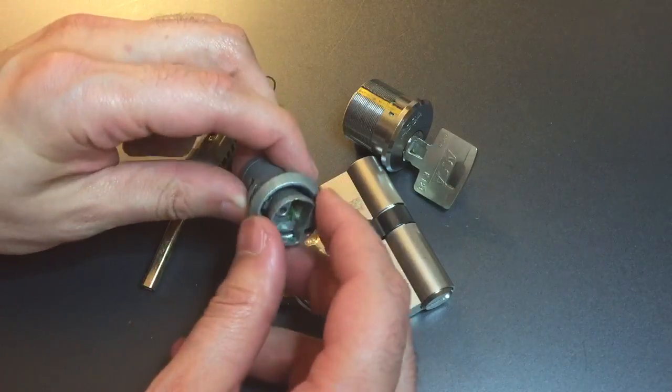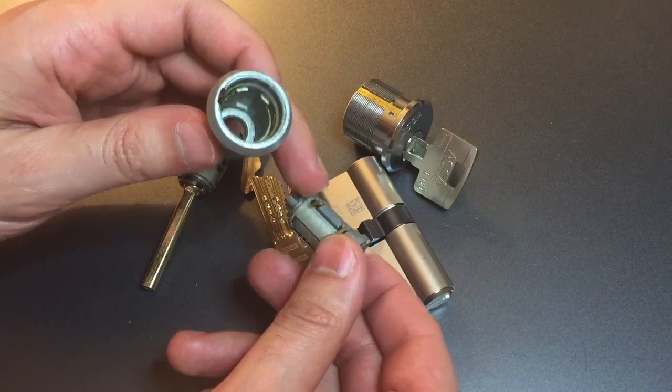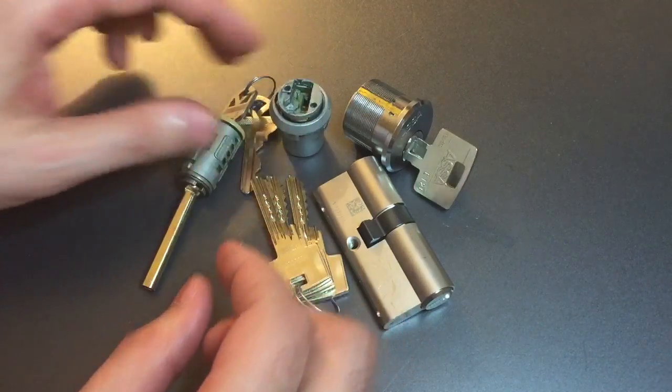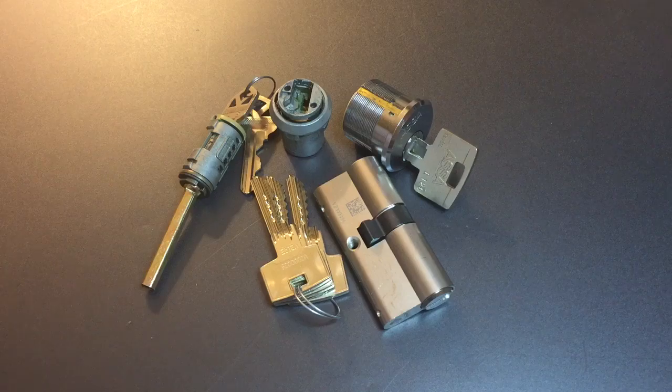he sent me this GM lock that has the same squared-off sidebar as the Kwikset redesign and a mechanism that looks surprisingly similar to what Kwikset uses in their locks. So I'm going to be taking a close look at that.